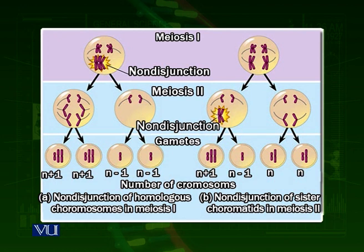This non-disjunction could occur in meiosis II as well. Sometimes meiosis I completes correctly and both cells resulting from meiosis I have the correct number of chromosomes, and then they start with meiosis II. But at anaphase II, when they have to separate...